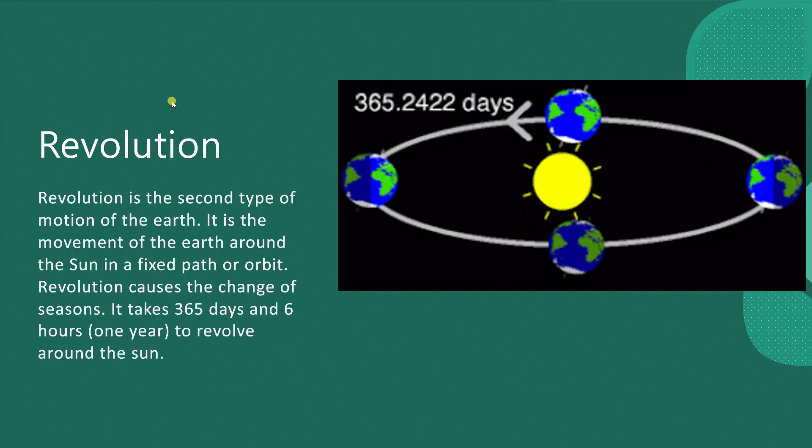Revolution is the second type of motion of the earth. It is the movement of the earth around the sun in a fixed path or orbit. Revolution causes the change of seasons. It takes 365 days and 6 hours, one year, to revolve around the sun.